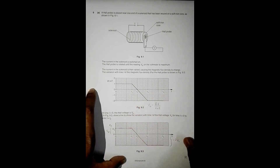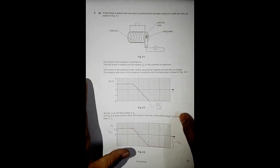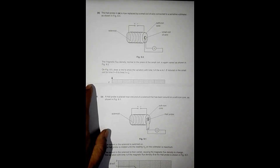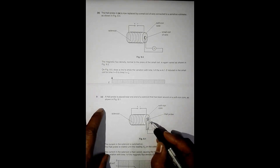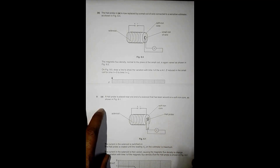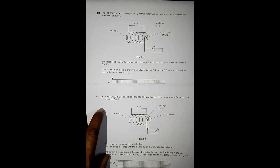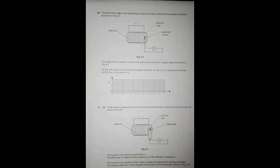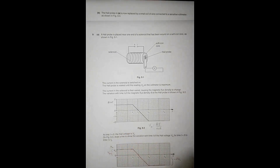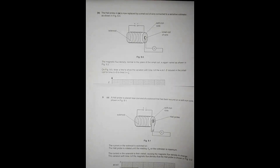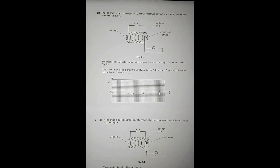The next part of the question says the Hall probe is replaced by a small coil of wire connected to a sensitive voltmeter, as shown in figure 9.4. The magnetic flux density normal to the plane of the small coil is again varied as shown in figure 9.2. We now need to find the EMF induced in the coil throughout these times.